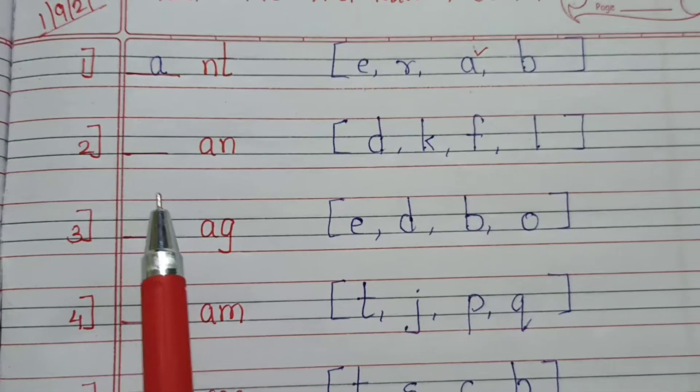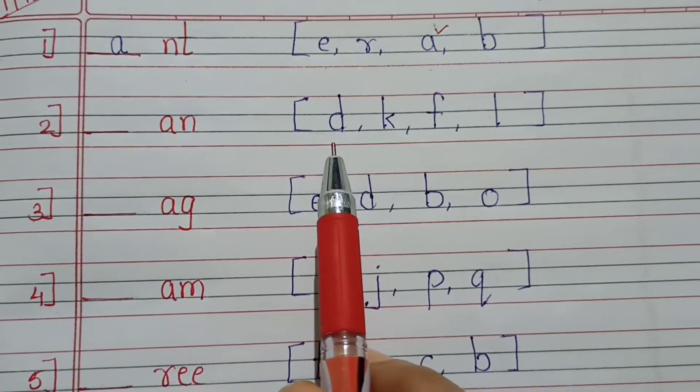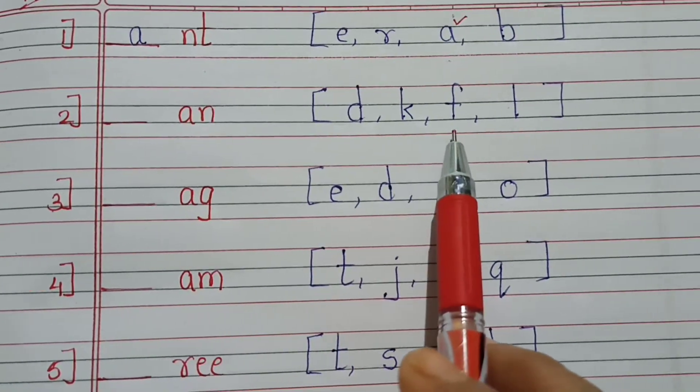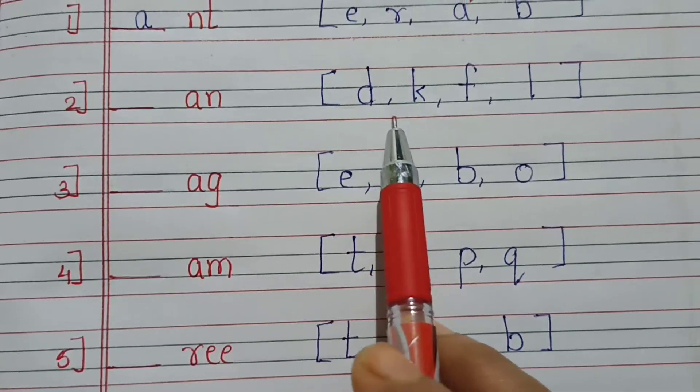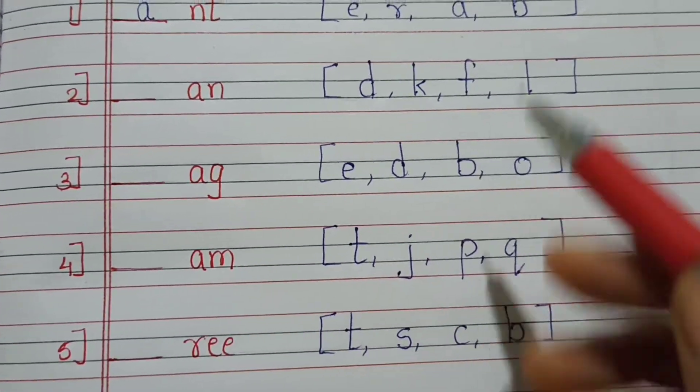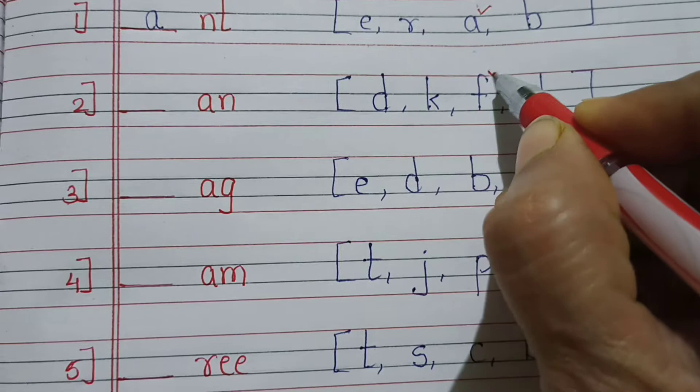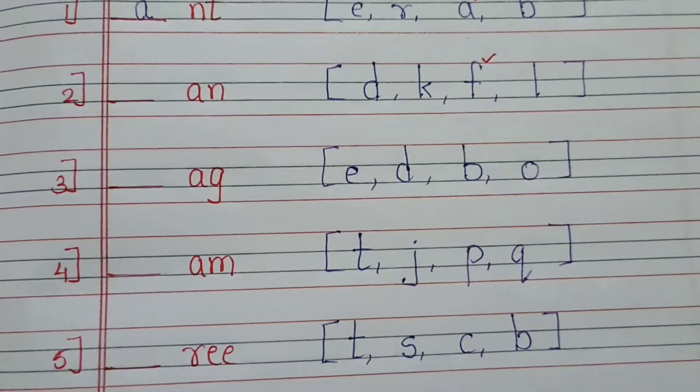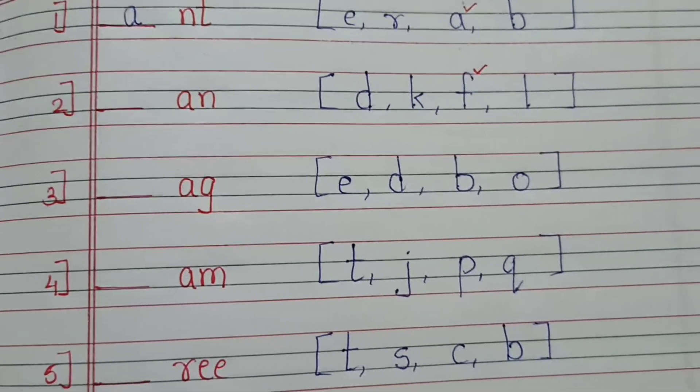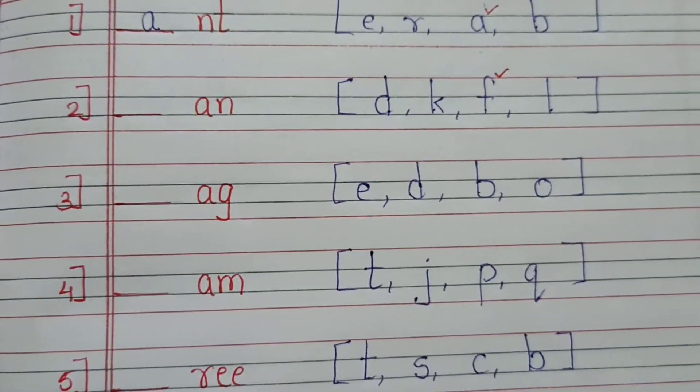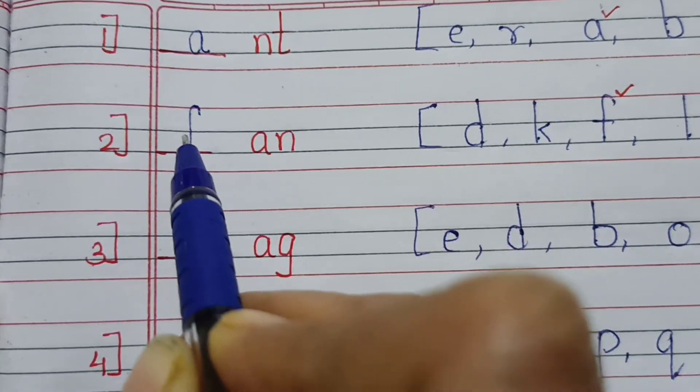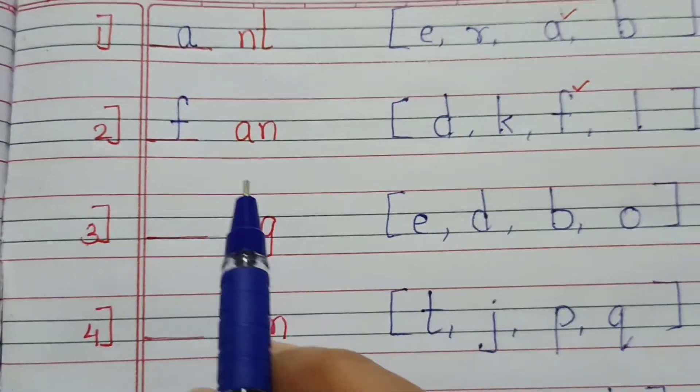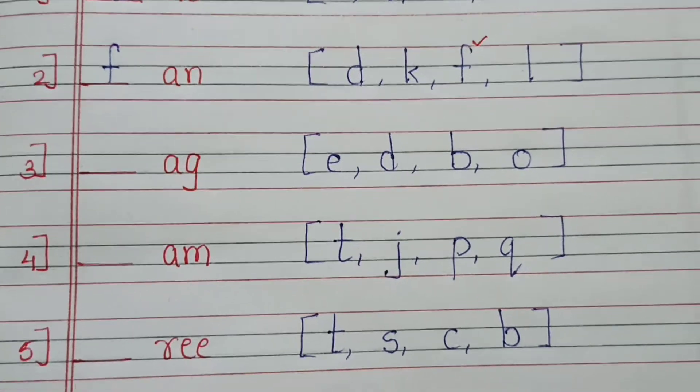Next one is second one, dash A N. So what I have given the option? D, K, F, L. So what is the correct option? F, A, N. Yes. Fan. The correct answer is fan, F. During the exam you only have to tick, but here we are doing the revision so you have to write it. So what is the answer? F, A, N, fan.